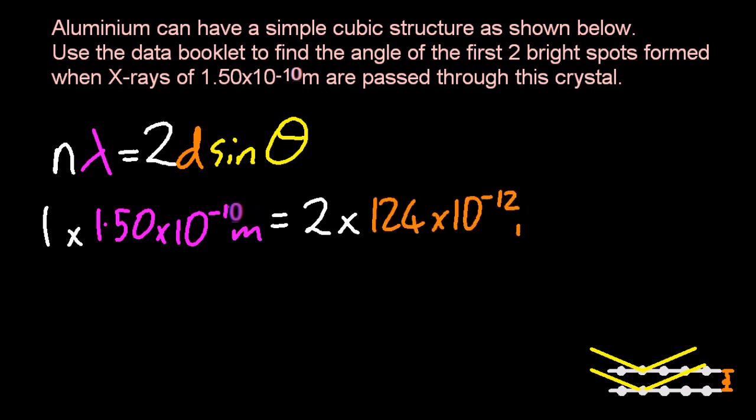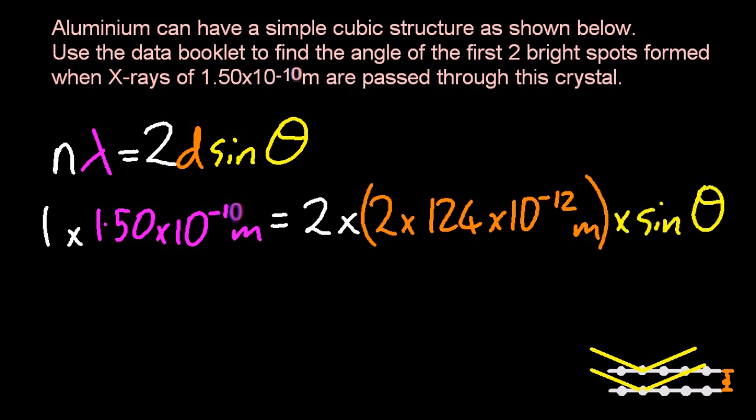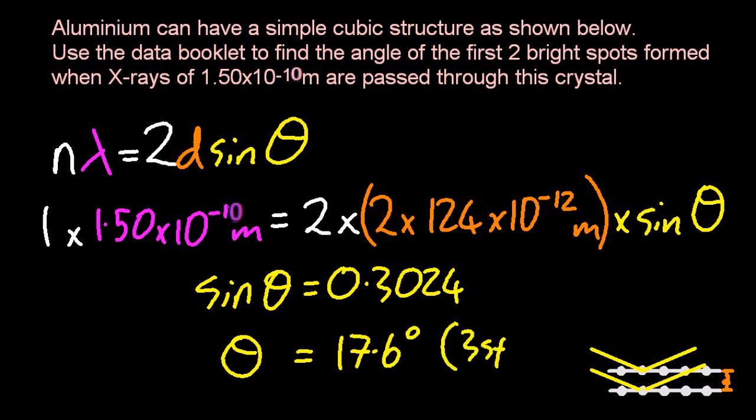From the IB data booklet, multiply that by the sine of the angle theta. That gets me the first angle of the bright spot at 17.6 degrees, three sig figs. To get sine theta into the angle theta, you probably have to use inverse sine on your calculator.